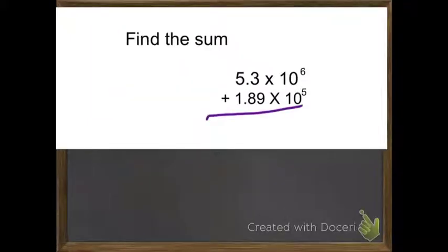So, today, right now, we're going to find the sum of 5.3 times 10 to the 6th power plus 1.89 times 10 to the 5th power. So, you first do the sum. I'll give you 3 answers.